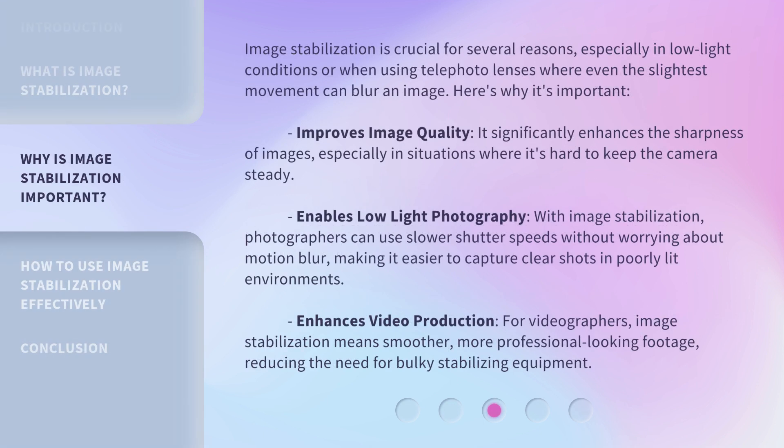Image Stabilization is crucial for several reasons, especially in low light conditions or when using telephoto lenses where even the slightest movement can blur an image. Here's why it's important. First, it improves image quality — it significantly enhances the sharpness of images, especially in situations where it's hard to keep the camera steady.